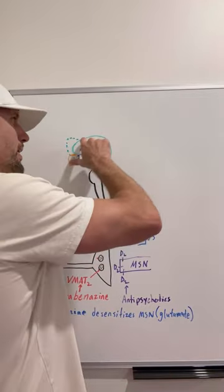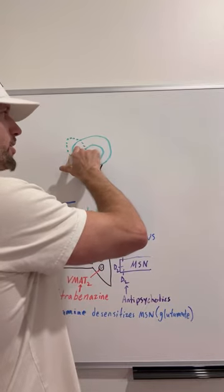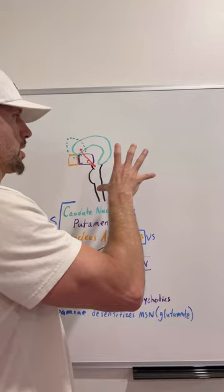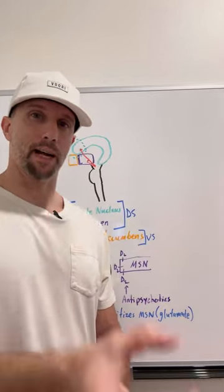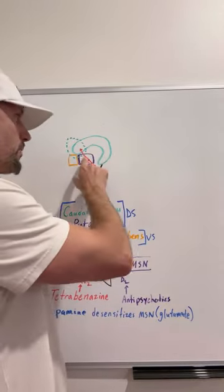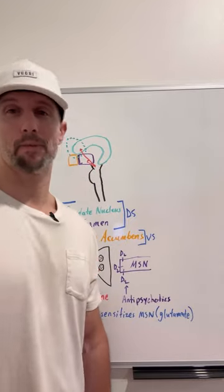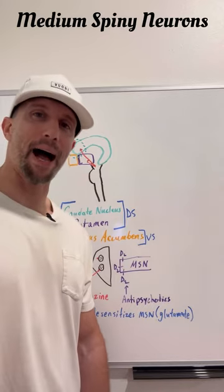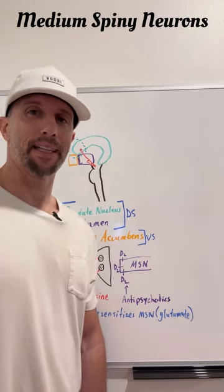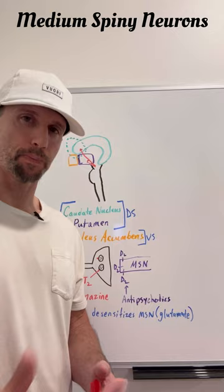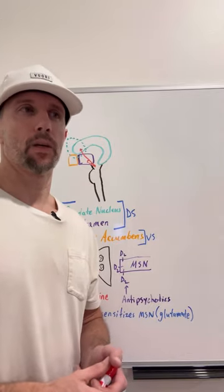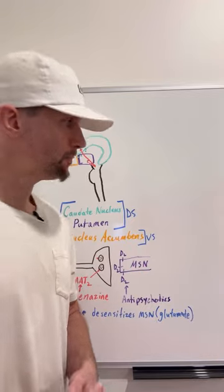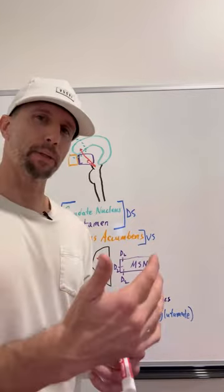The dorsal striatum includes the caudate nucleus — we have the anterior portion, which is where it's most affected, and then the body and tail of the caudate nucleus — which is a group of neuronal cell bodies that kind of wrap around. We also have the putamen, which also has what are called medium spiny neurons. These spiny neurons in these areas are inhibitory, and so they release GABA — they're GABAergic neurons — and so if these die out, you lose that inhibition.